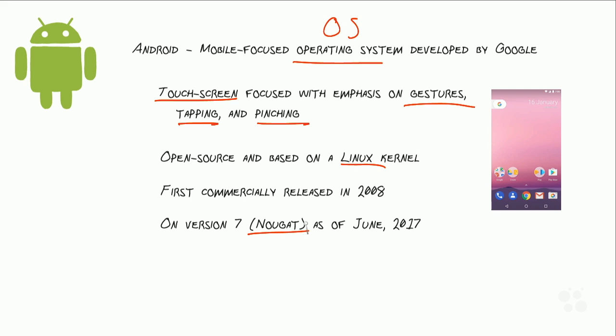Android is found on more devices around the world than any other single operating system. That includes Macintosh, Windows, Linux, iOS, any other operating system you can imagine or think of. Android beats them all.